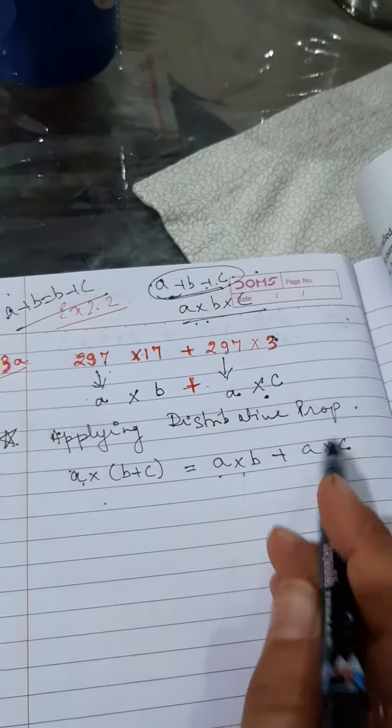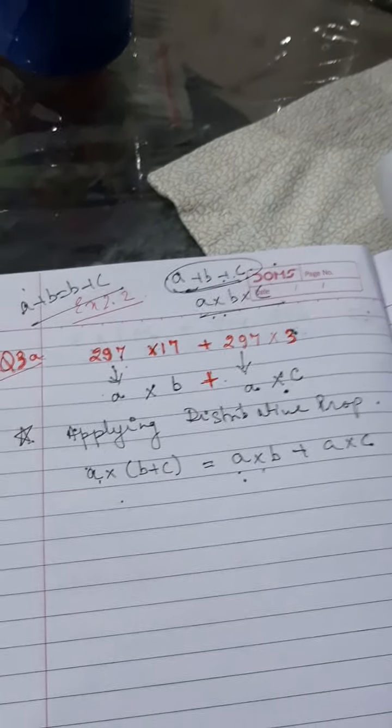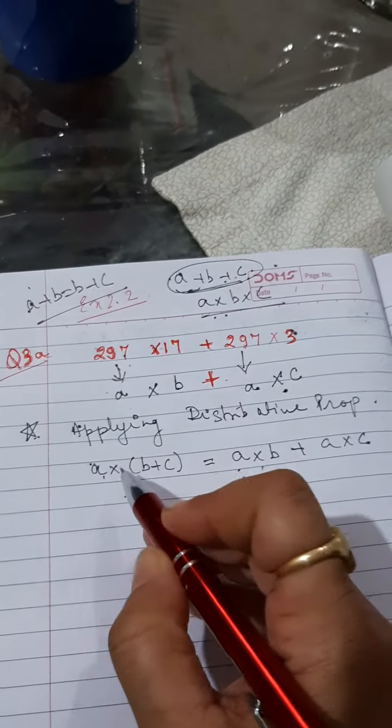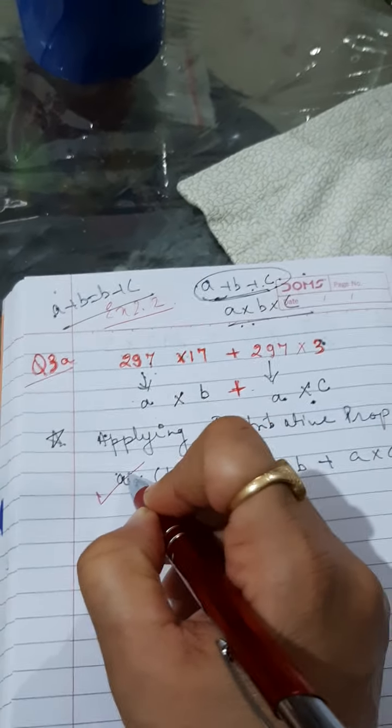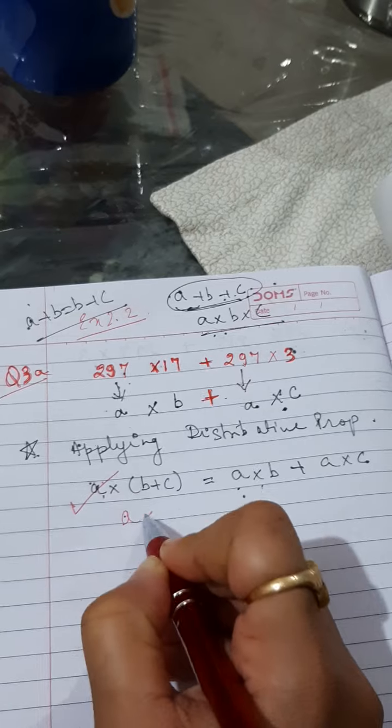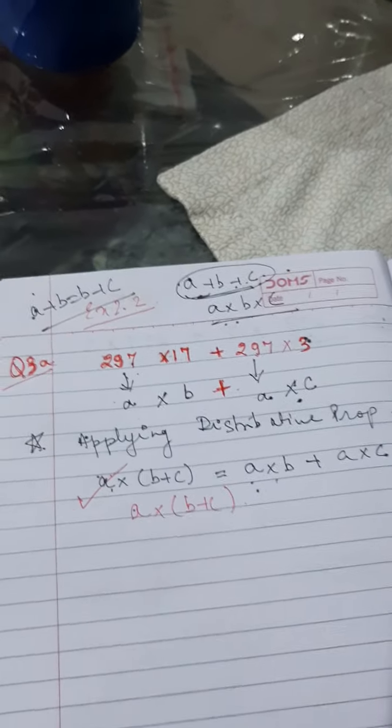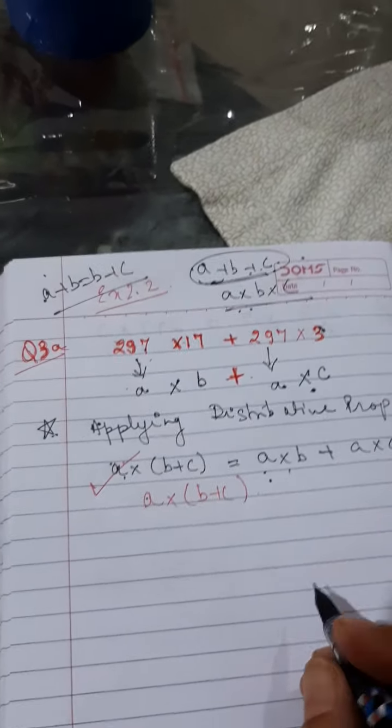Children, this question is given in this form. So which formula we will take? We will use this formula. That is a into (b plus c). Taking this formula, we will further proceed.